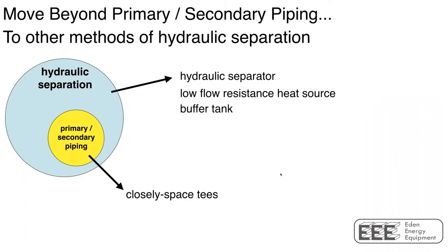One of the points I made earlier was to move beyond primary-secondary piping — and I'm not here to attack it. We have done many systems over the years with primary-secondary piping and closely spaced T's. We've talked about the details quite a bit. Over on the left side of the screen I'm showing this big blue circle, calling it hydraulic separation, and then I'm showing the small yellow circle within it, labeling it primary-secondary piping.